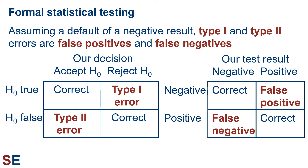But when the null hypothesis is true and we reject it, or when the null hypothesis is false and we accept it, we've made either a type 1 or type 2 error. These errors correspond to false positives and false negatives when we think about this in the context of a medical test or some other model where the null hypothesis can be described as a negative result.